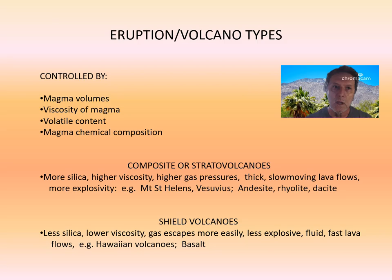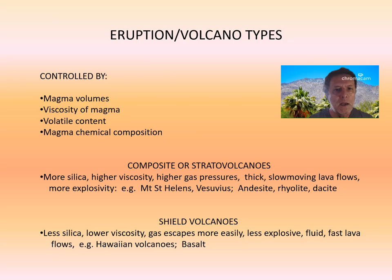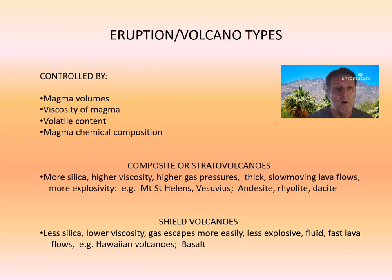The opposite would be a material with low viscosity, such as water, which flows very readily. Another example might be blood — that's highly liquid and flows readily. The third factor that controls an eruption or volcano type is volatile content. A volatile is primarily a gas. Many eruptions contain a huge volume of gas — mainly carbon dioxide and water vapor. The more gas you have, the more explosive an eruption would be. Finally, the chemical composition of a magma also controls the eruption and volcanic type.